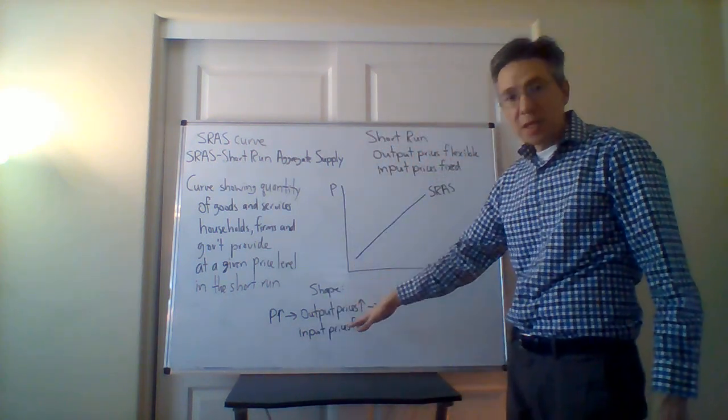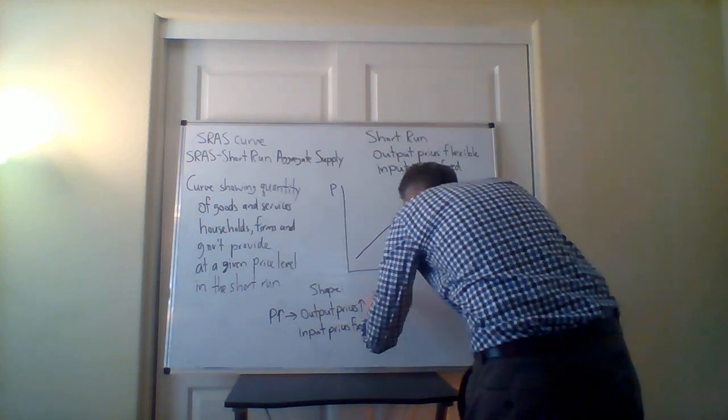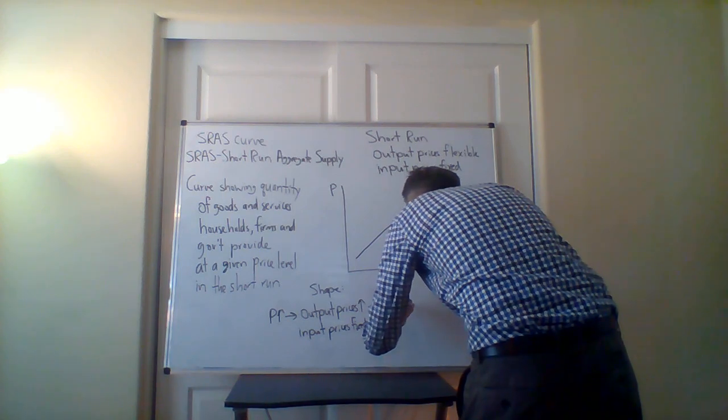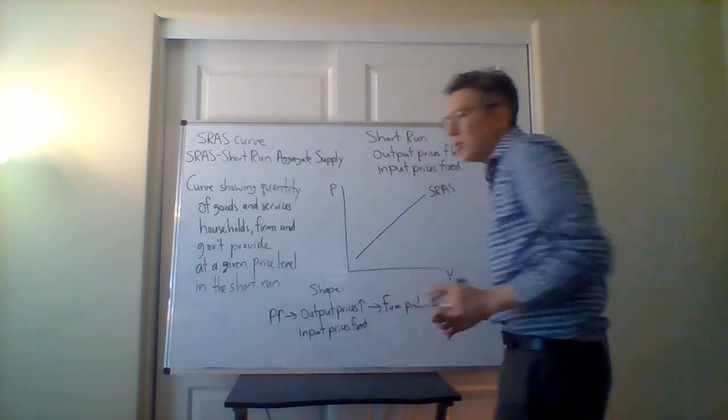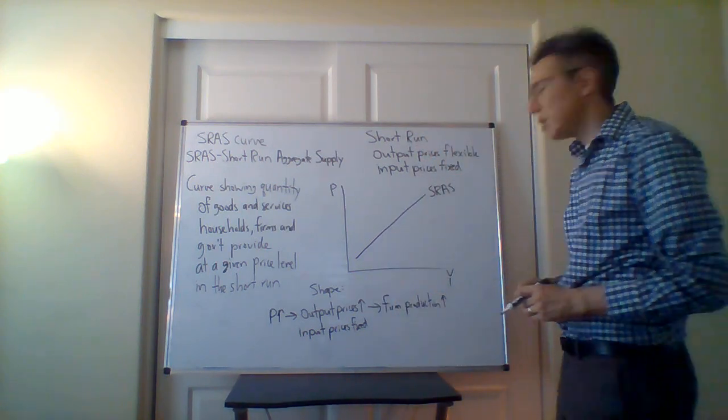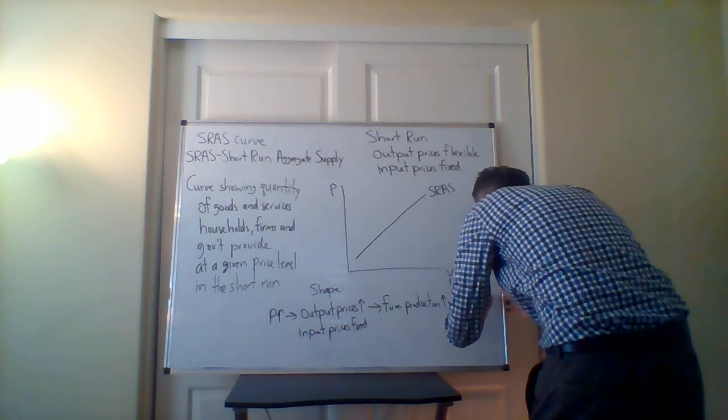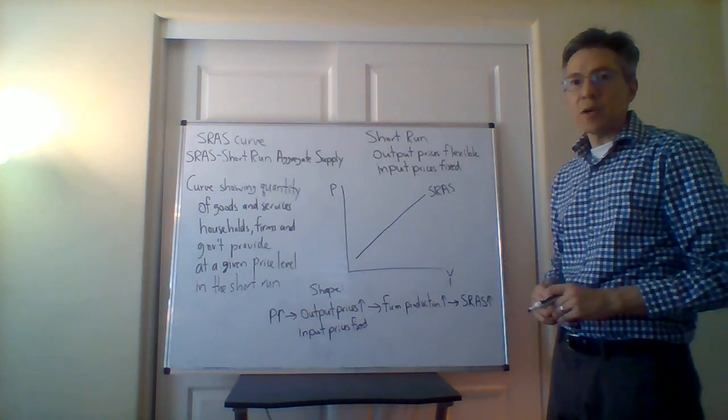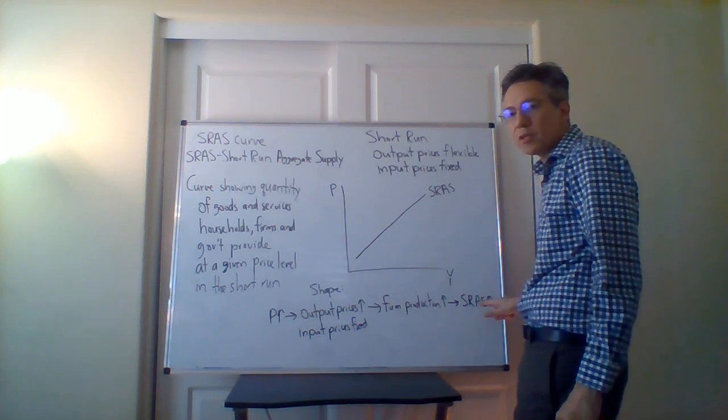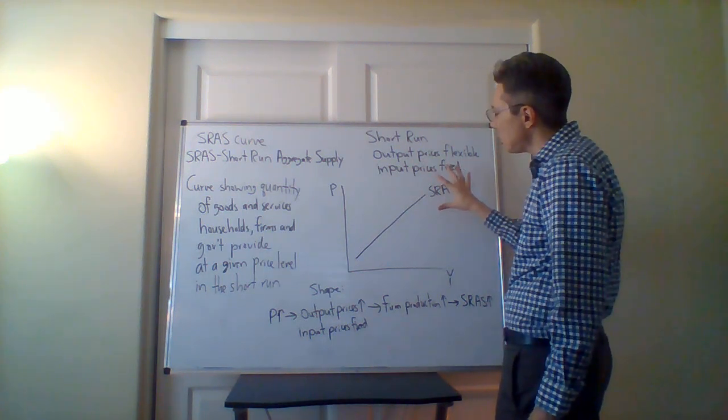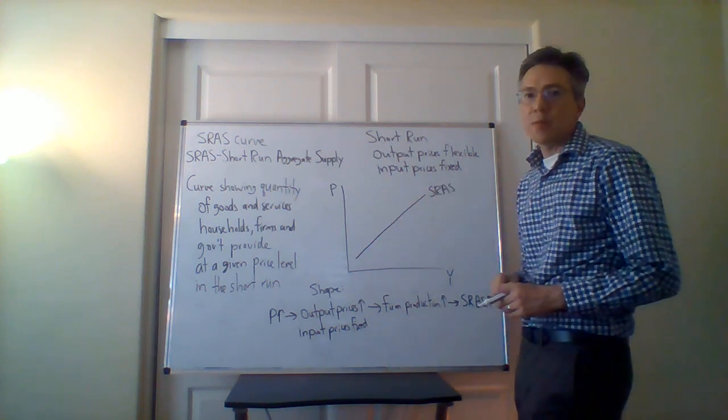So the output prices are going up, the input prices are fixed. So what does that mean then for the firm? Well, they're making more money, and so what are they going to do? They're going to make more. So firm production is going to increase. And so then what will happen to the SRAS? Short-run aggregate supply curve is going to go up. So we notice that as price increases, short-run aggregate supply goes up. And so what we notice is a positive relationship between these variables, and as a result, we then get this upward sloping line.